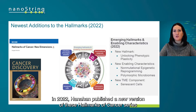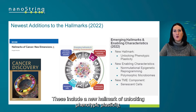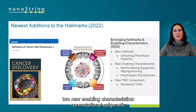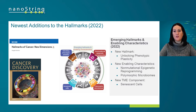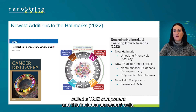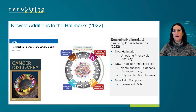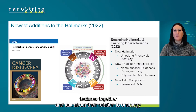Just this year in 2022, Hanahan published a new version of these Hallmarks of Cancer that we now have added to the canon. These include a new hallmark of unlocking phenotypic plasticity, two new enabling characteristics — non-mutational epigenetic programming and polymorphic microbiomes — and finally a new category we call a TME component, which includes senescent cells. In the coming slides, we'll walk through each of these new features and talk about their relationship to oncology and why they were included.